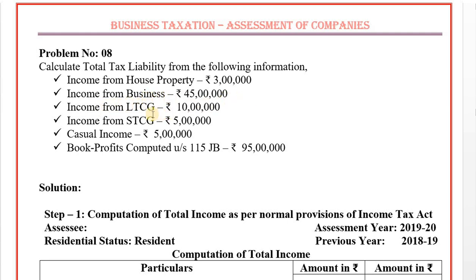Business head: 8 lakhs. Long-term capital gain income: 8 lakhs. Short-term capital gain income: 5 lakhs. Capital gain: 8 lakhs. Casual income from other sources. Long-term capital gain: 20% special rate of tax. Casual income: 30% special rate of tax. Book profits computed under section 115JB: 95 lakhs.